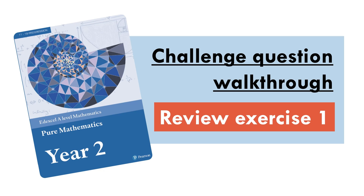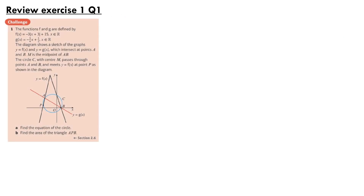Hello everyone. This is the challenge question walkthrough for Edexcel's Pure Year 2 textbook for Review Exercise 1. For question 1, the functions f and g are defined by f(x) equals minus 3 times the modulus of x plus 3, plus 15, and g(x) equals minus 3 quarters x plus 3 halves. The diagram shows a sketch of the graphs y equals f(x) and y equals g(x), which intersect at the points A and B.